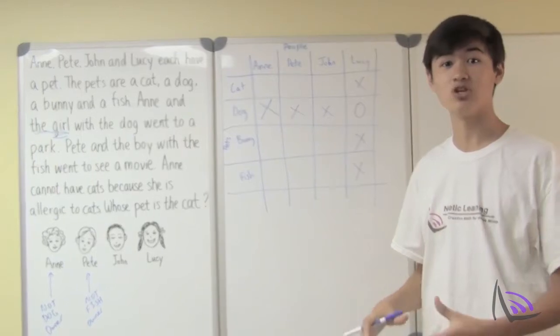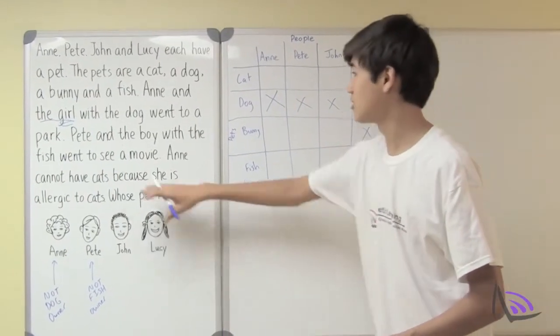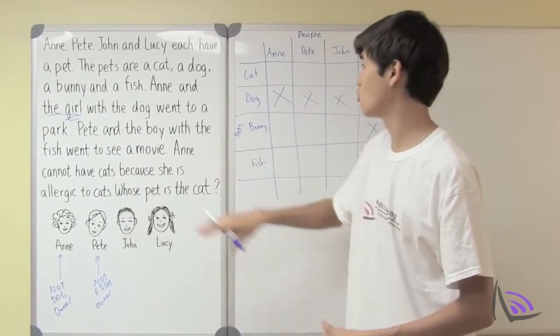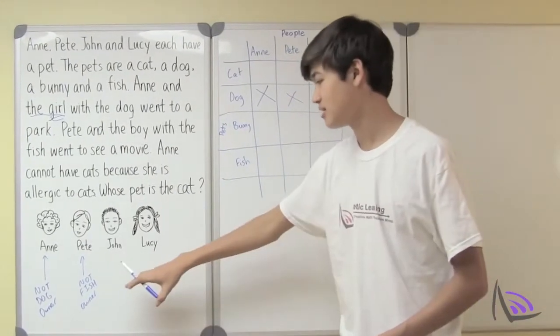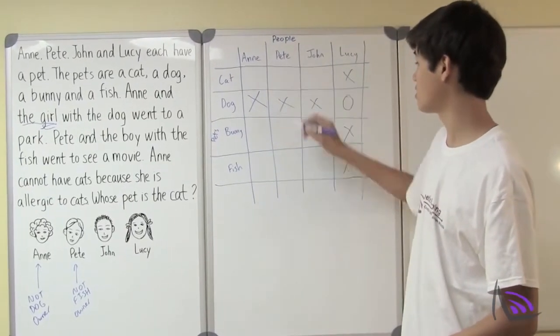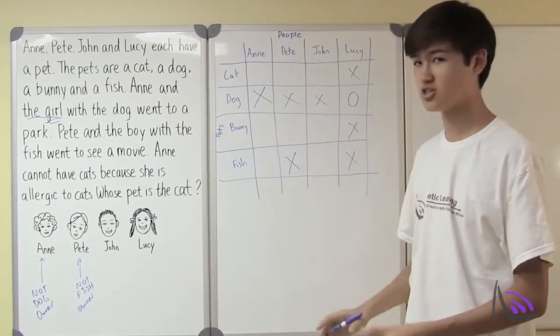So now let's go to the next line and see if we can do the same kind of planning. So Pete and the boy with the fish went to see a movie. So what we concluded earlier is that Pete must not be the fish owner. So right here, Pete is not the fish owner.